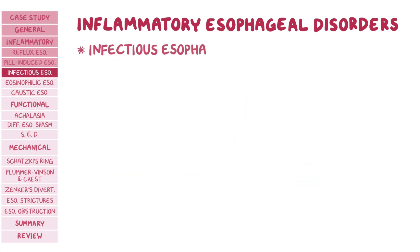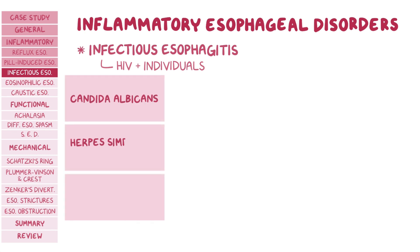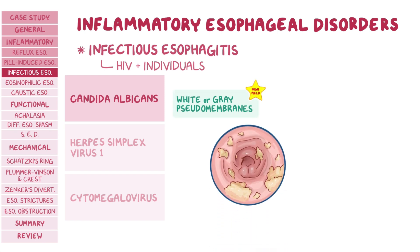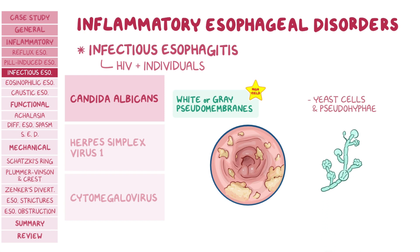Infectious esophagitis is most commonly seen in immunocompromised individuals, like those that are HIV positive. The most common causes of HIV-associated esophagitis include Candida albicans, herpes simplex virus 1, and cytomegalovirus. A high yield fact: with Candida esophagitis, upper endoscopy will show patches of adherent white or gray pseudomembranes on the underlying mucosa. The histopathology reveals yeast cells in pseudohyphae that invade mucosal cells of the esophagus.